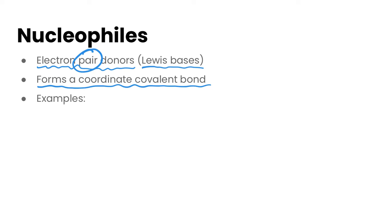So really what you're looking for here is something that has a lone pair of electrons. And if it has a lone pair of electrons, it means it's able to be an electron pair donor and able to form coordinate covalent bonds.